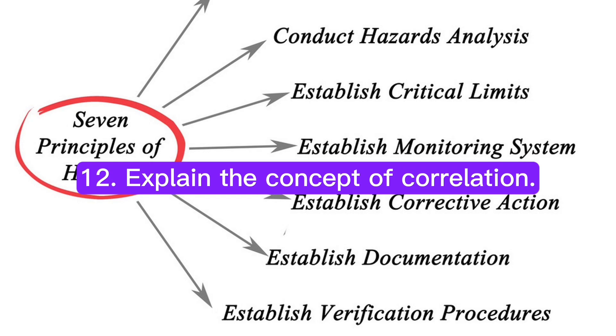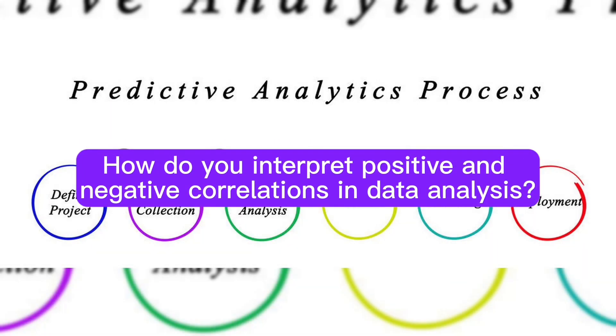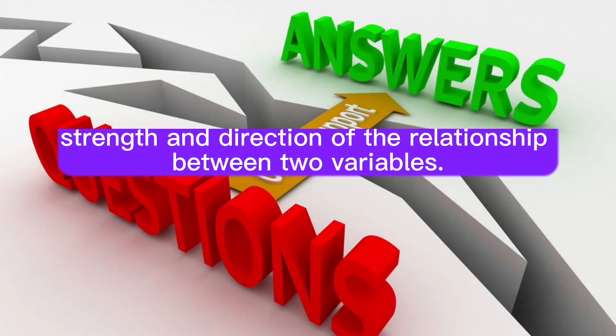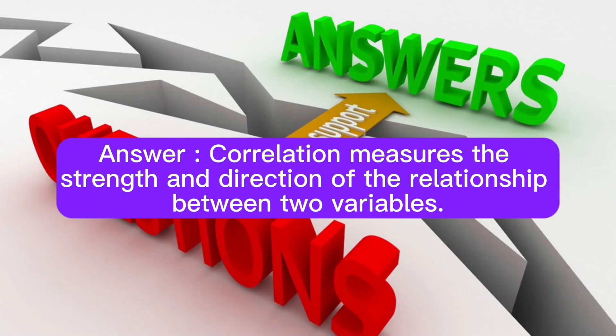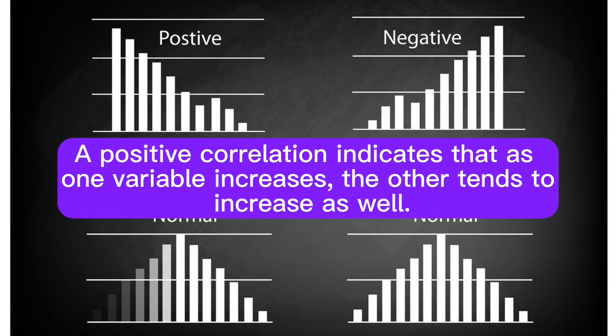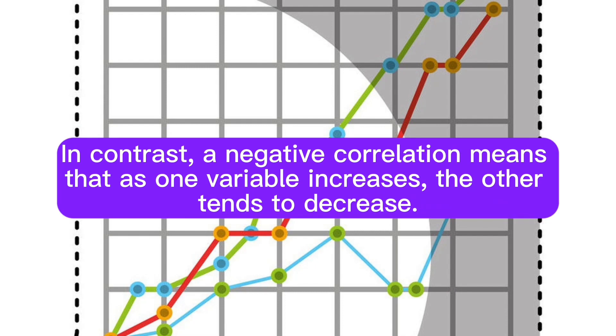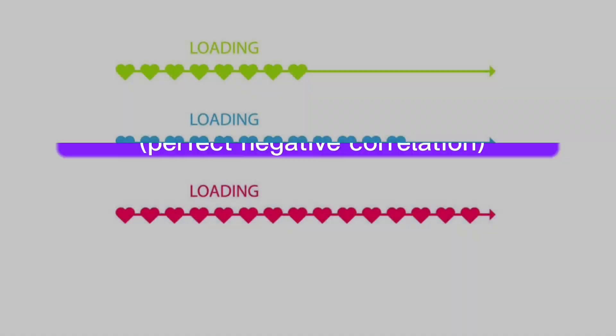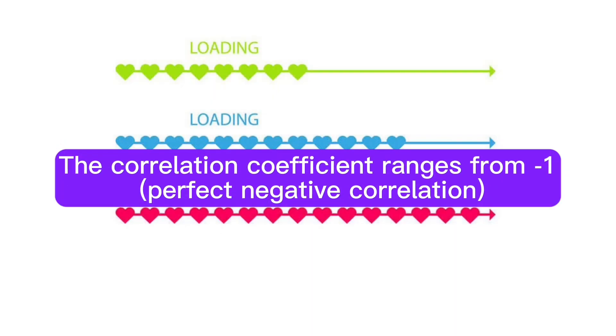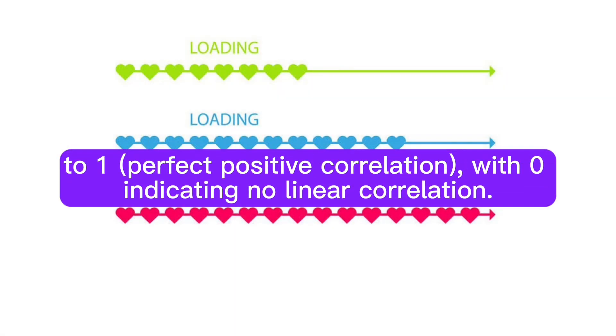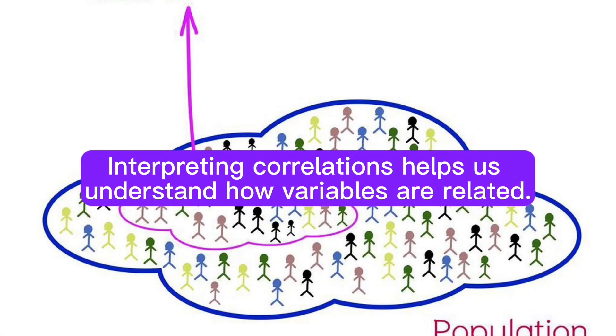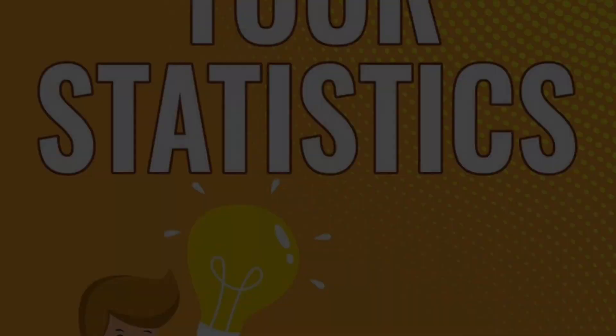Question 12: Explain the concept of correlation. How do you interpret positive and negative correlations in data analysis? Answer: Correlation measures the strength and direction of the relationship between two variables. A positive correlation indicates that as one variable increases, the other tends to increase as well. The correlation coefficient ranges from minus one, perfect negative correlation, to one, perfect positive correlation, with zero indicating no linear correlation. Interpreting correlations helps us understand how variables are related.